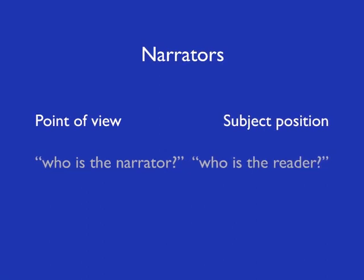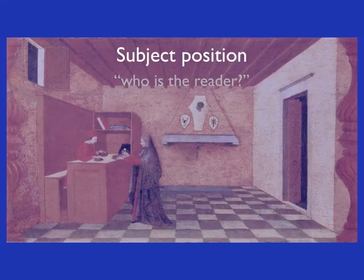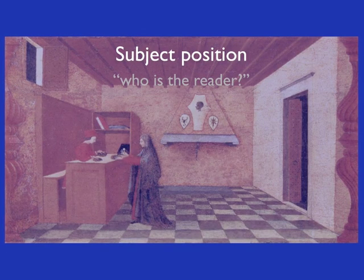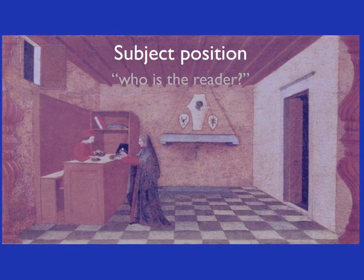Slightly more difficult to grasp is the notion of subject position, but this is where it gets really interesting — being a literature or any kind of art student. If you had to boil down what we do as humanities scholars into a single task, it would be identifying subject positions and working on them, which, by the way, makes me a good Hegelian, because that's what Hegelian philosophy is all about. So what is a subject position? The subject position of a text or artwork answers the question: who are you, the reader? In other words, what attitude towards itself does the text expect you to take?